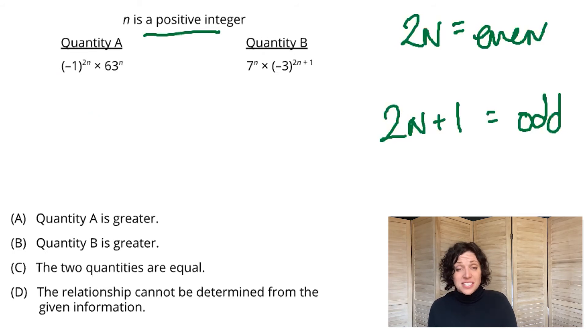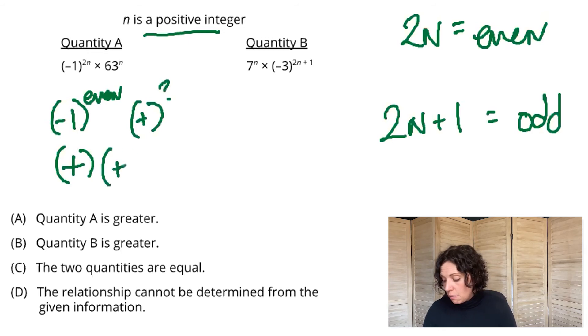So for quantity A, this negative 1 we're raising it to an even power. Well, a negative number raised to an even power, as I mentioned, is just going to be a positive number. 63 positive number raised to any power is just gonna stay positive.